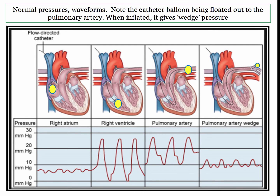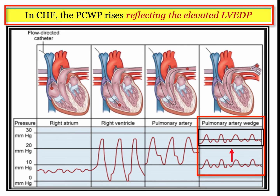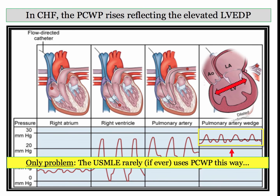The balloon is advanced from the right atrium, into the right ventricle, and the pulmonary artery — literally floated out until it becomes wedged in a distal pulmonary artery vessel — where it measures pressures reflected back from the left atrium. In congestive heart failure, the pulmonary capillary wedge pressure will rise, reflecting elevated left ventricular end diastolic pressure. It is a rare question where the NBME uses the wedge pressure alone to tell you the patient is in heart failure — they can simply give a clinical vignette with rales and an S3.